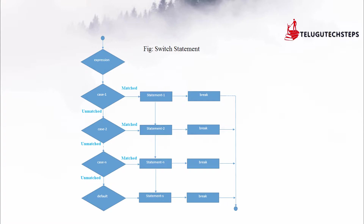Now let's look at the execution flow of the switch statement. First the expression is evaluated, then case 1 is checked — if it matches, the statement inside executes and a break terminates the switch. If unmatched, it moves to case 2. If no cases match and an invalid number is entered, the default block executes. This is the execution flow of the switch statement.